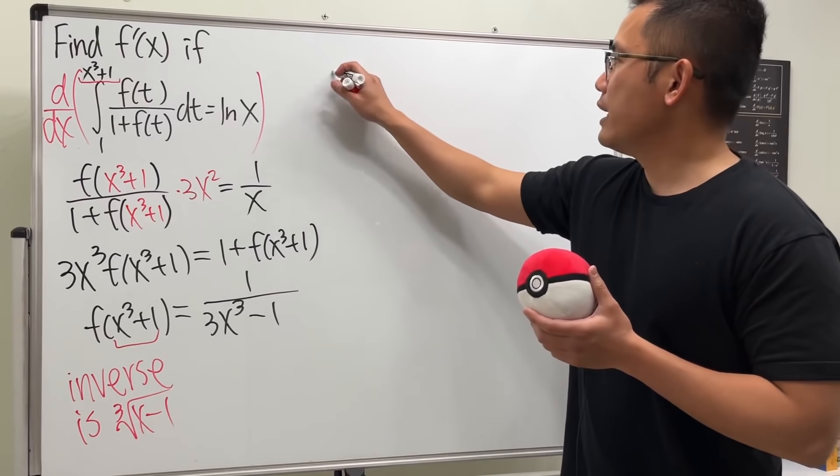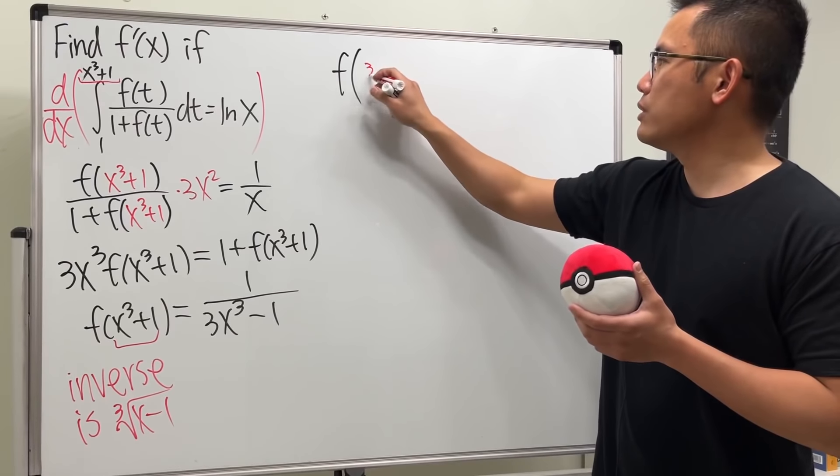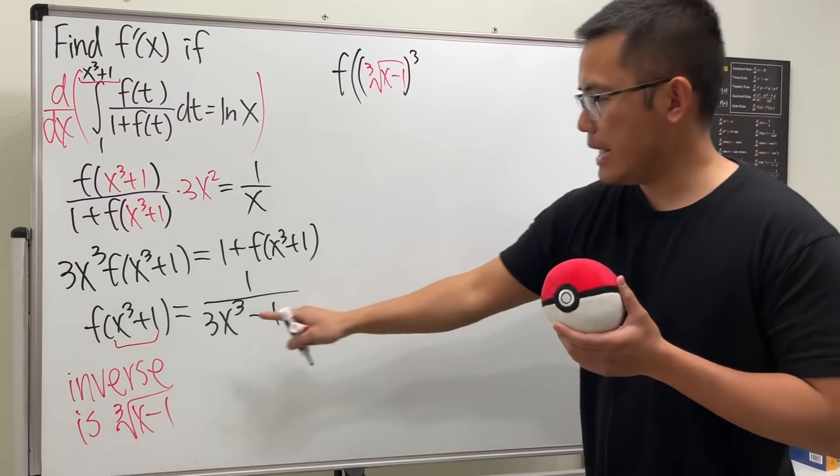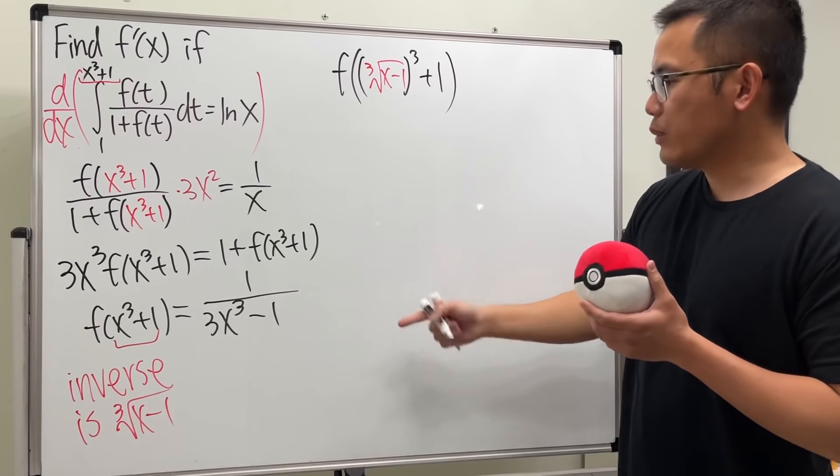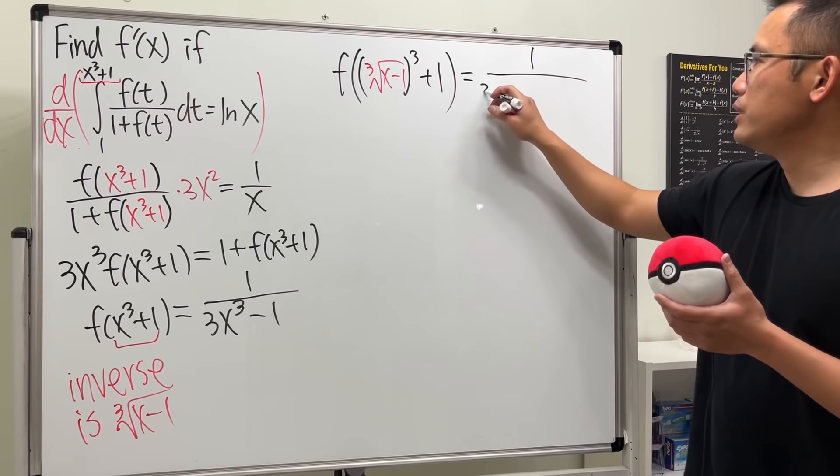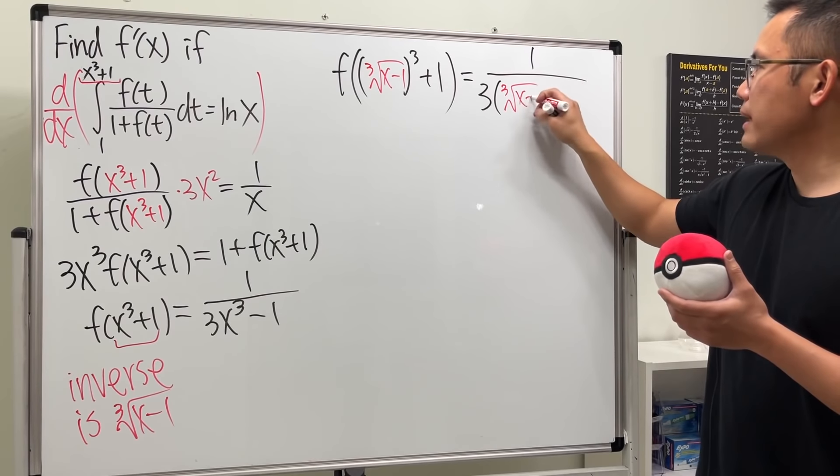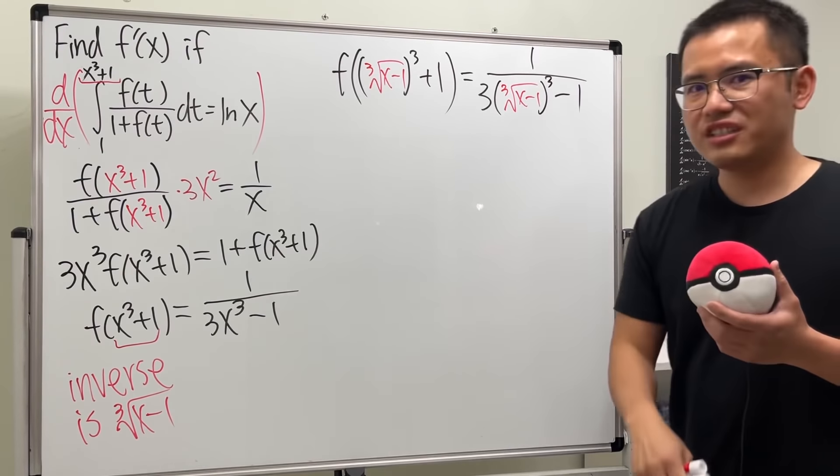So let's see. We will get f of plugging this into the x. So we get the cube root of x - 1 and then raise to the third power and plus 1 after that. And on the right-hand side, we do the same thing, right? Put this in here. So we get 1 over 3 times the parentheses. And we have the cube root of x - 1 to the third power and then minus 1. Check this out.